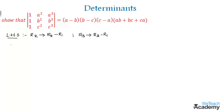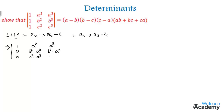After performing these operations, row 1 remains the same, giving us 1, A squared, A cubed. In the second row we get 1 minus 1 which is 0, then B squared minus A squared, then B cubed minus A cubed. In the third row we similarly get 0, then C squared minus A squared, and C cubed minus A cubed.